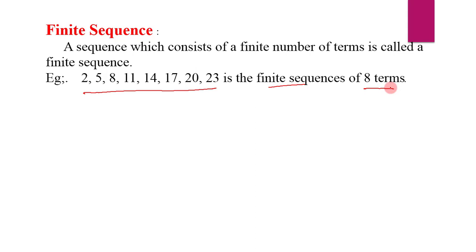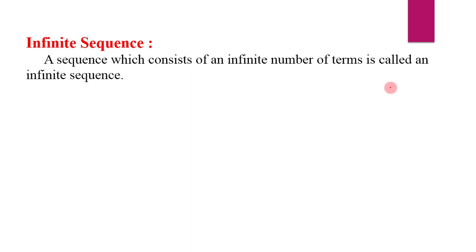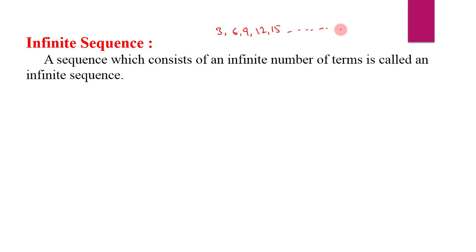The next type is an infinite sequence. A sequence which consists of an infinite number of terms is called an infinite sequence. Earlier I took the example of multiples of 3: 3, 6, 9, 12, 15 and so on. The dash represents continuity — there are infinitely many multiples of 3, so this is an example of an infinite sequence.